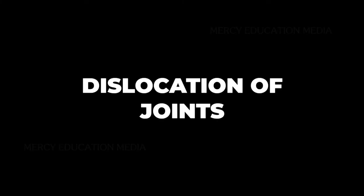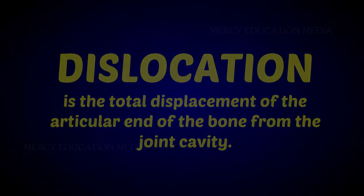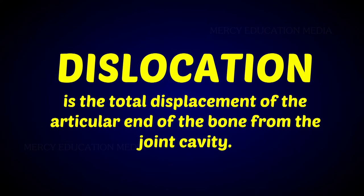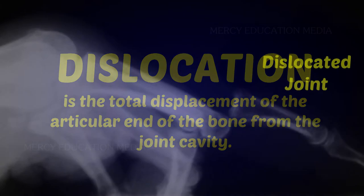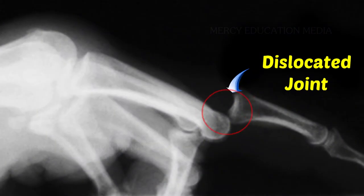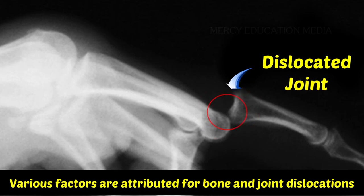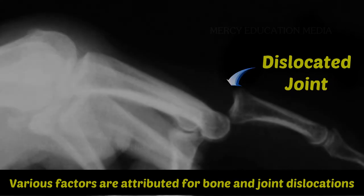What do you know about the dislocation of joints? Dislocation is the total displacement of the articular end of the bone from the joint cavity. The normal alignment of the bone becomes altered. Various factors are attributed for bone and joint dislocations.